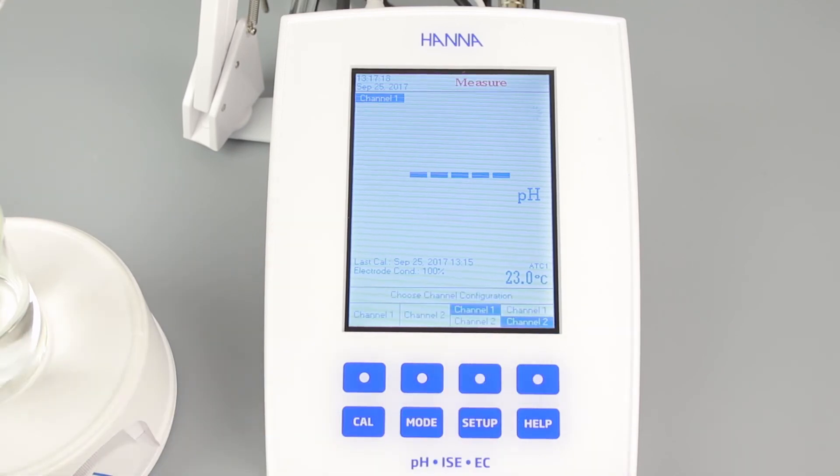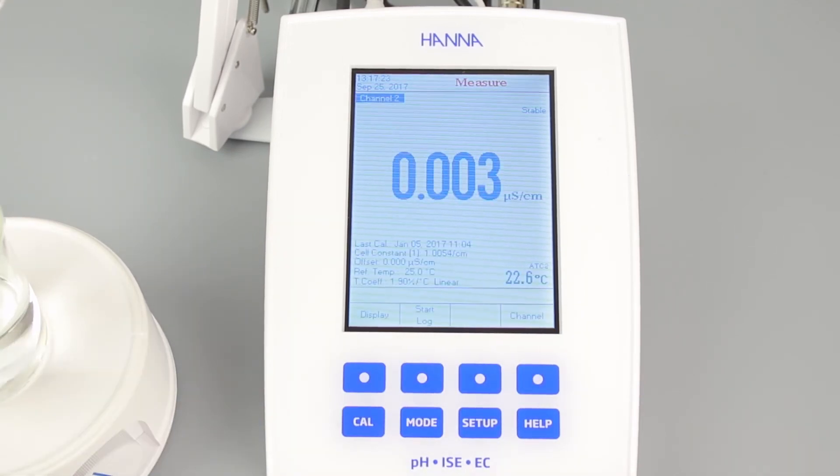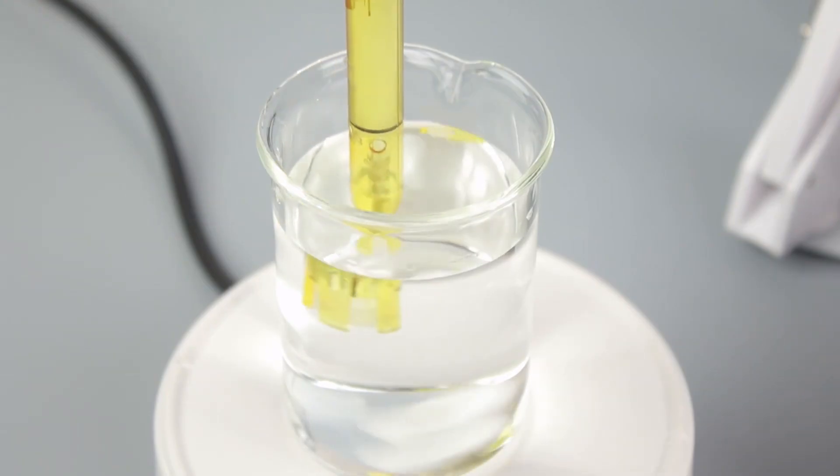To perform a conductivity calibration, access the EC channel by pressing channel, then pressing channel 2. Now press CAL to enter EC calibration mode. Submerge the EC probe in the standard of your choice. Be sure to rinse with standard before submerging the probe for best results. Once stable, press accept and then escape to save the calibration.